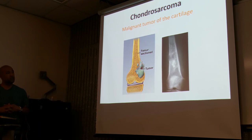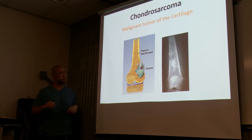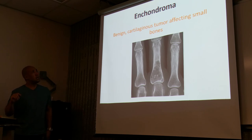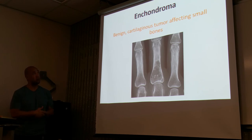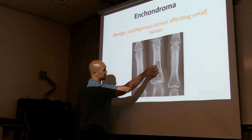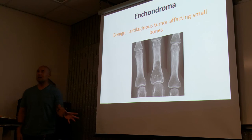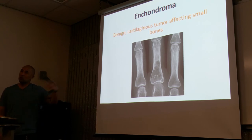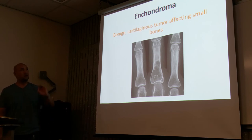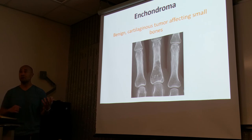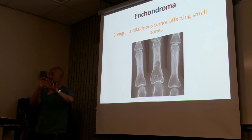Chondrosarcoma is a malignant tumor of the cartilage. Chondroma is benign — so not cancerous — a benign growth of cartilage affecting the small bones. You have changes in densities in the affected area. Can you tell if it's benign or malignant just by looking? No. So in addition to x-rays, they need to do a bone biopsy — they actually have to go in and take a piece of the bone to be more specific.